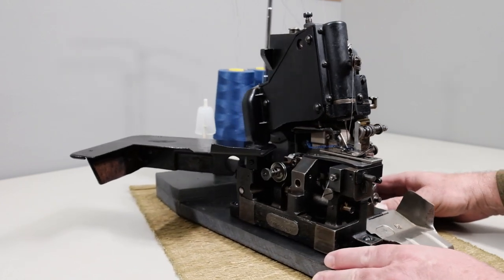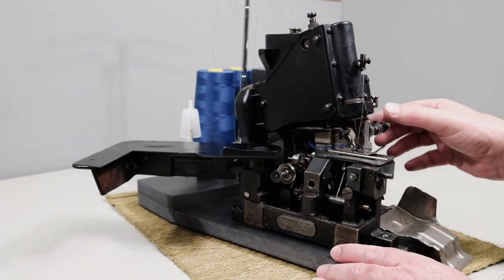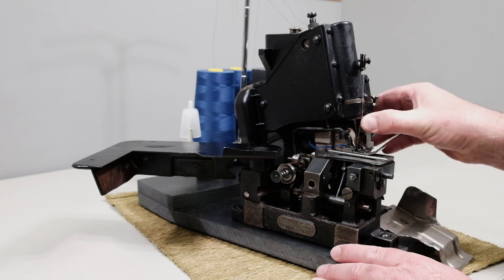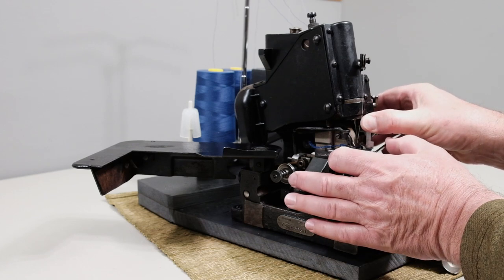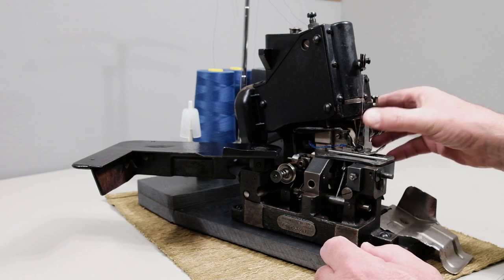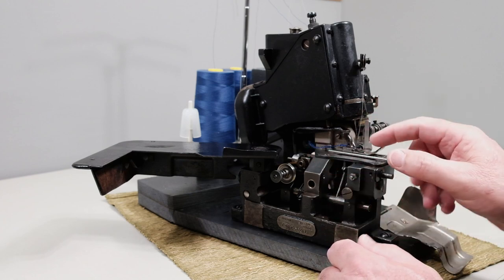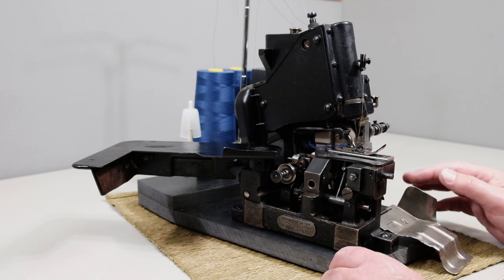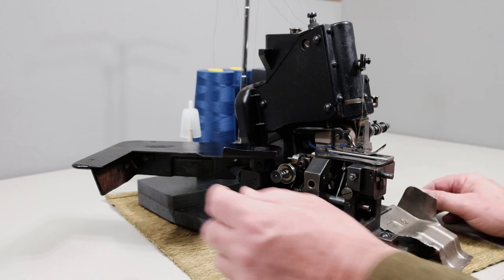And then another thing for when you are threading this, you can actually push this blade out of the way and rotate this foot over. So the foot will swing over here completely out of your way. So you can get in here and thread all these loopers and the way you got to run it through all the tensioners on the other side.